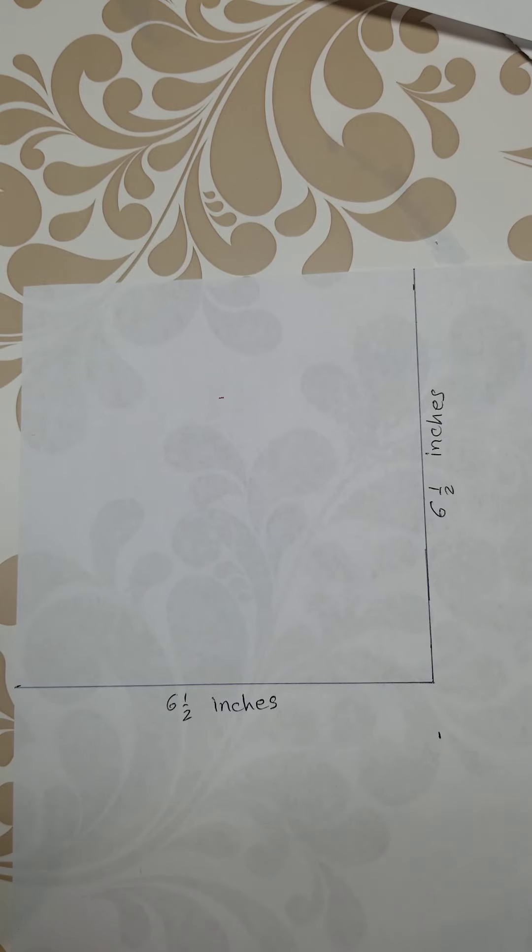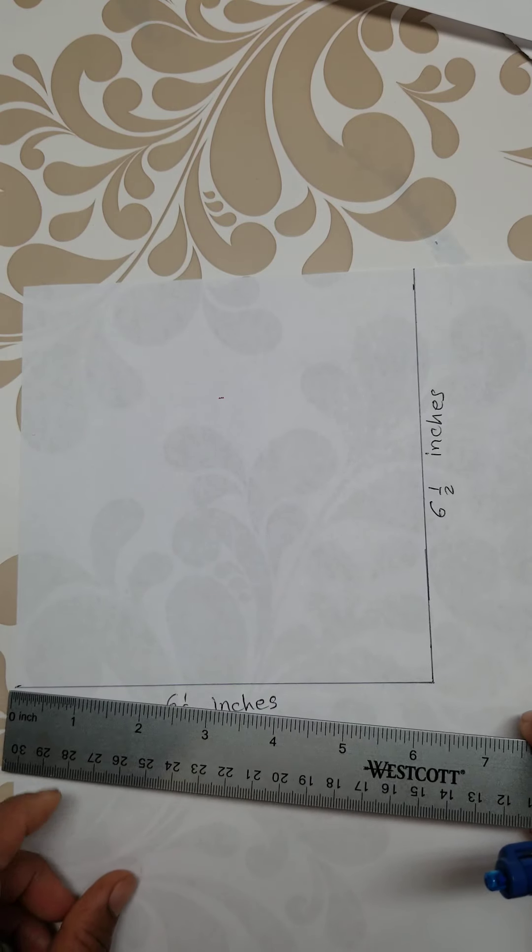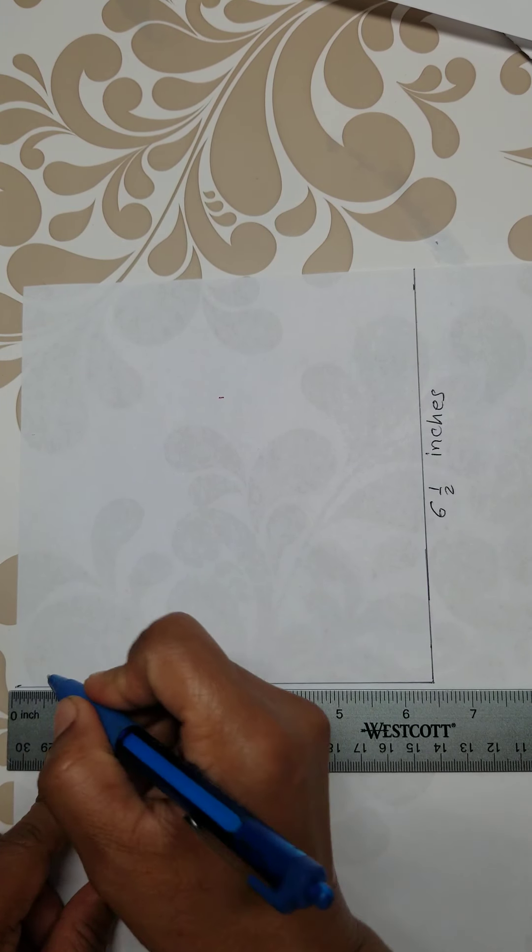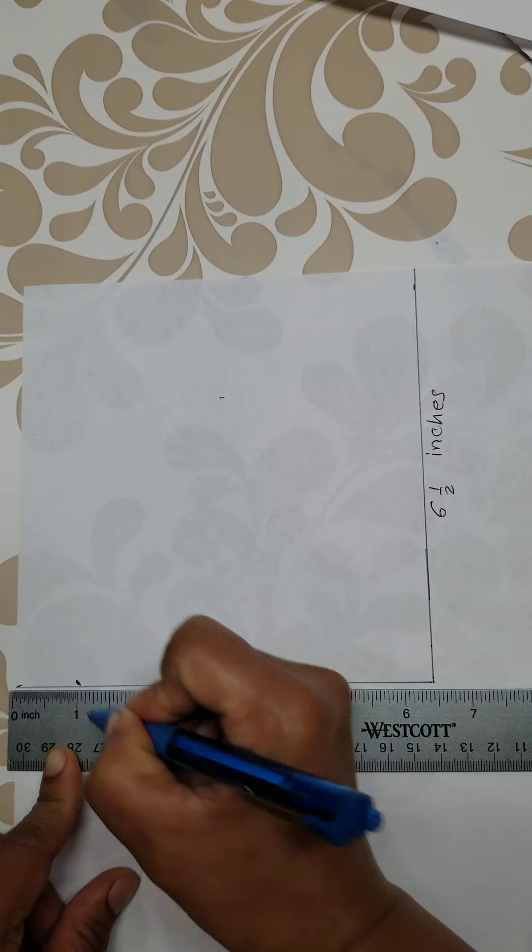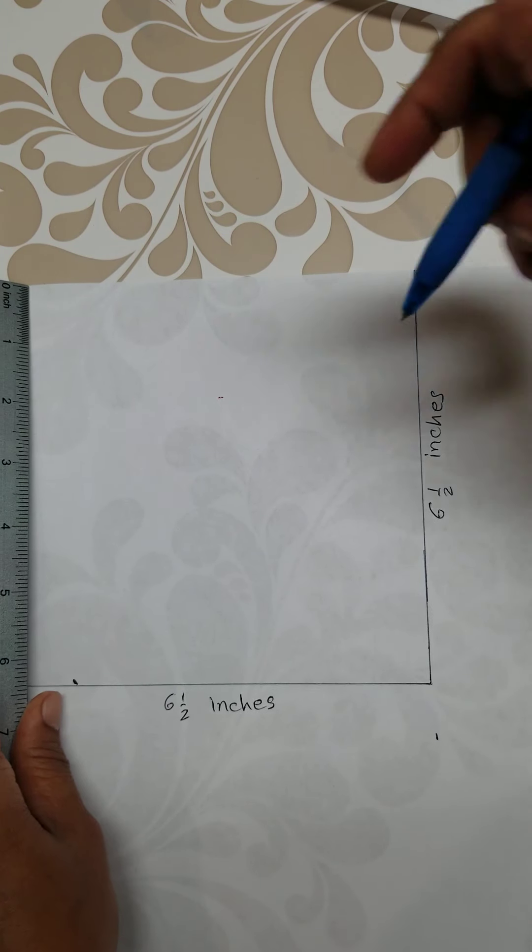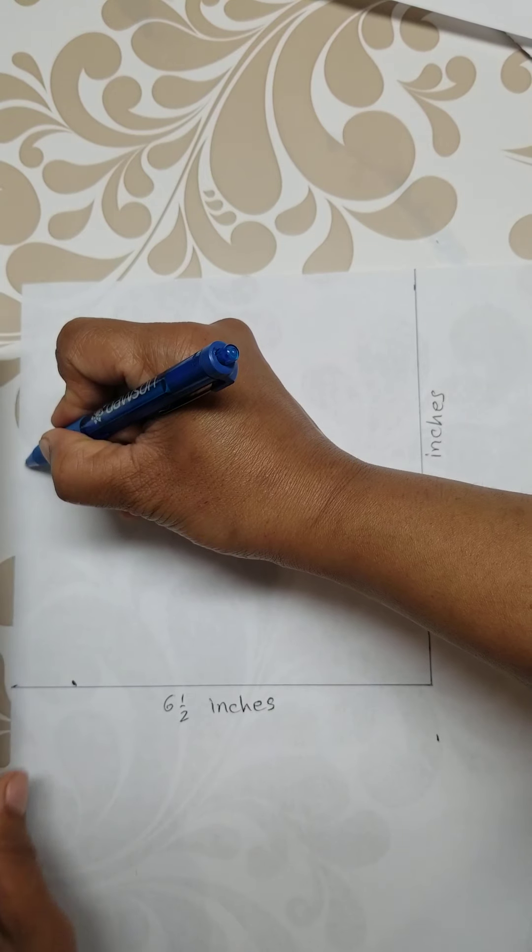Start from here, from this corner, give a point. One inch, and from top give a point at three inches. You don't have to be perfect. Here, two inches. Here, two and a half inches. Give a point.